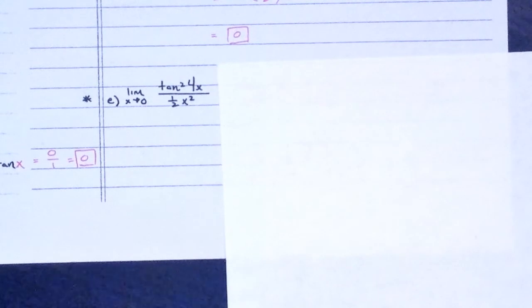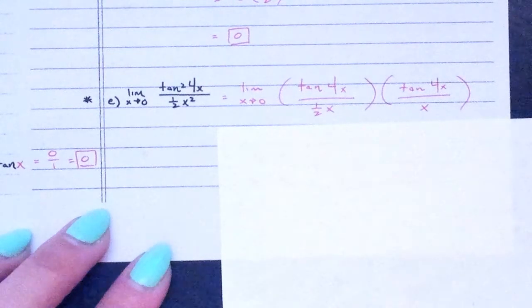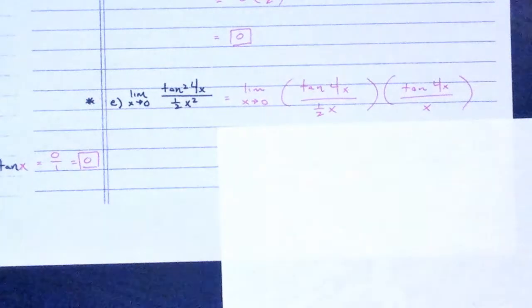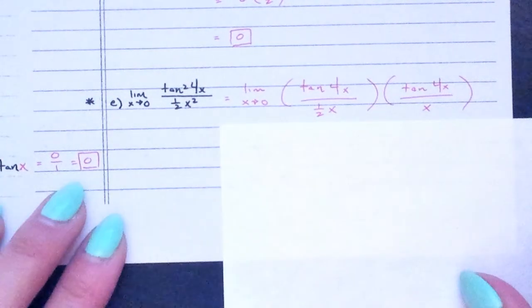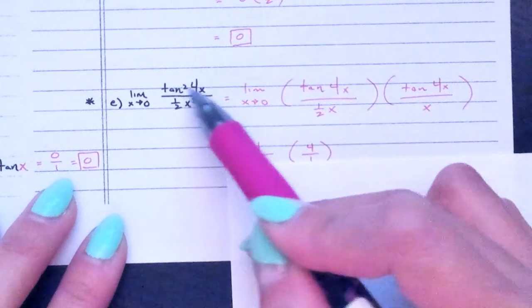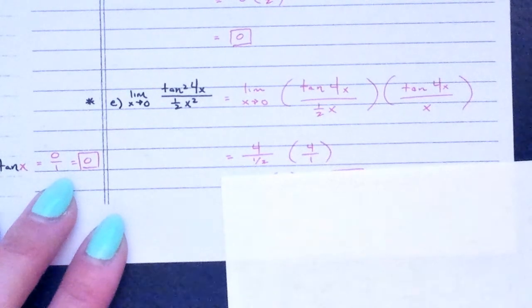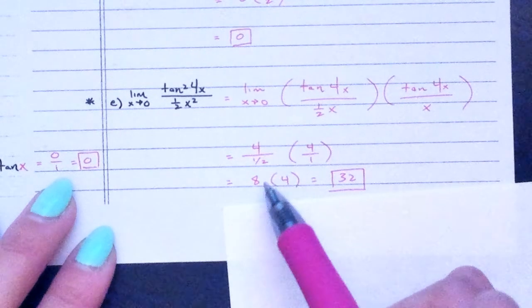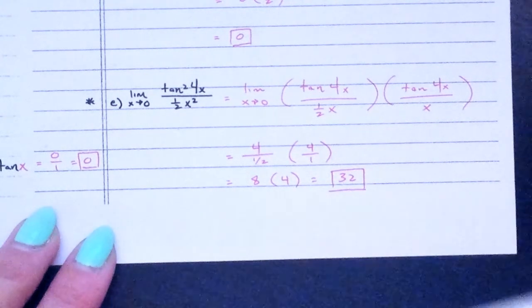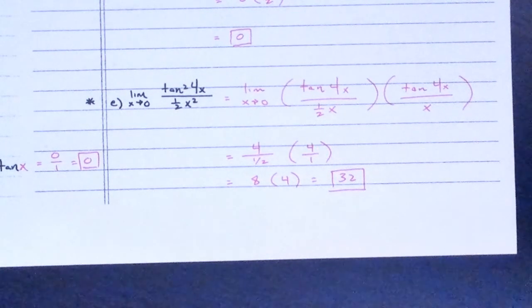For the last problem, write it out: the squared terms mean the expression appears twice, but note the 1/2 only goes with one x — apply the special rules to each factor, multiply the result, and that's your final answer. Come to studio support if you have questions; homework will be kept as short and sweet as possible. Good luck.